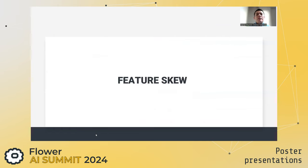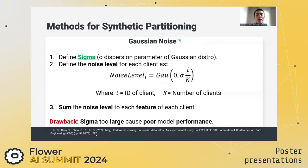Now let's see what are the new attributes that we have included in FedRML, and let's start from the feature skew. We have included the state-of-the-art Gaussian noise method, which introduces a defined level of noise to the features of the clients. Notice that this method has a drawback when sigma is too large, since the model's performance decreases drastically.